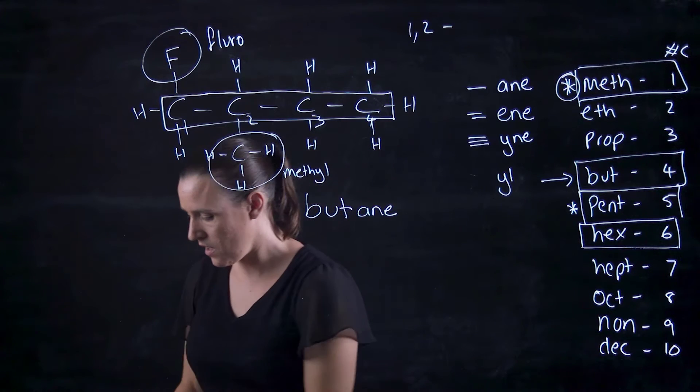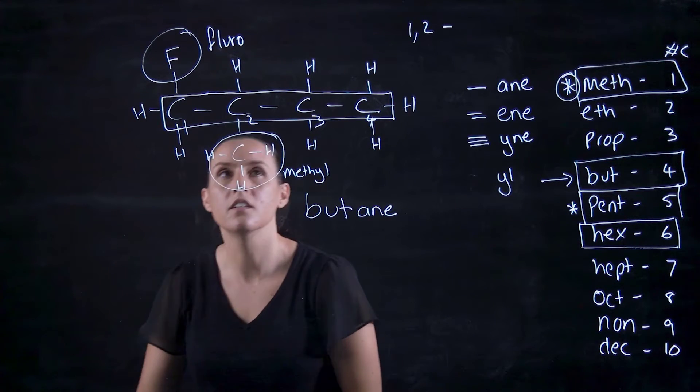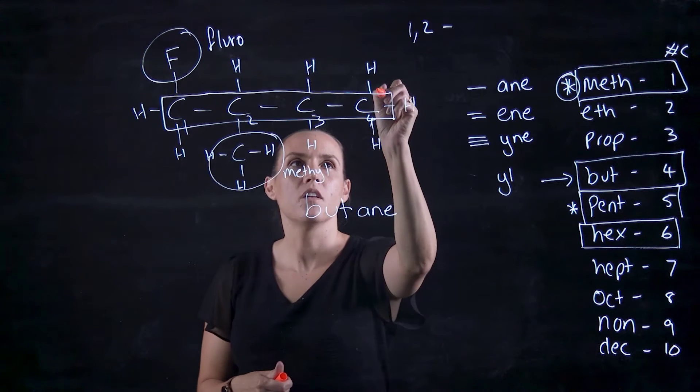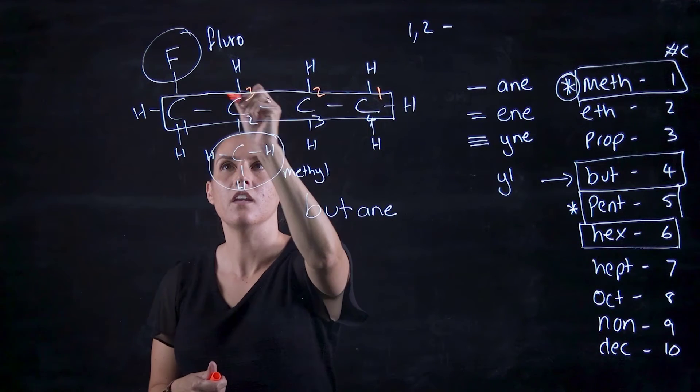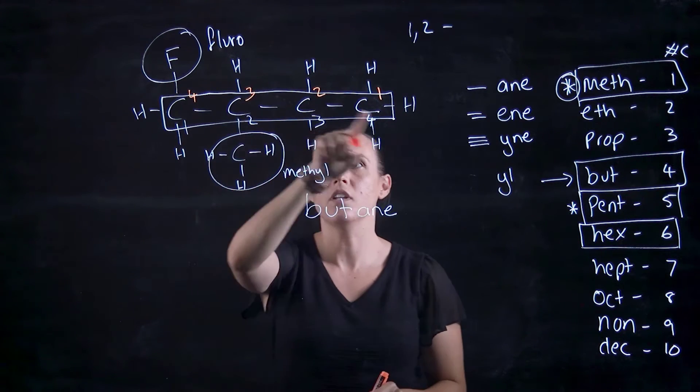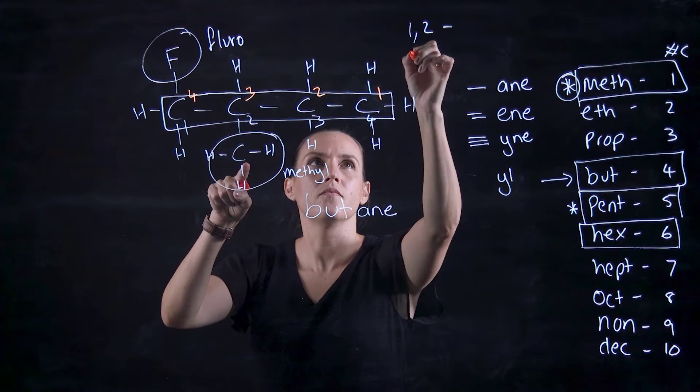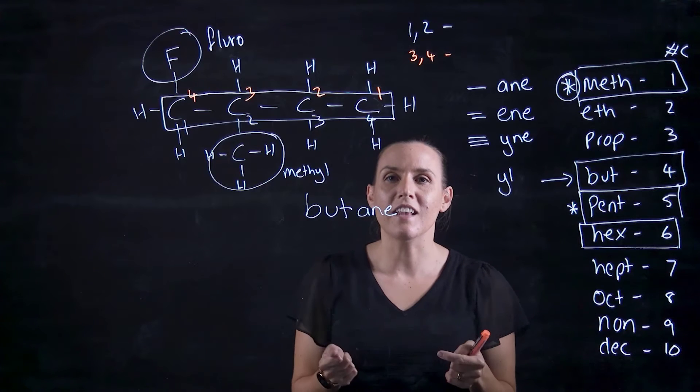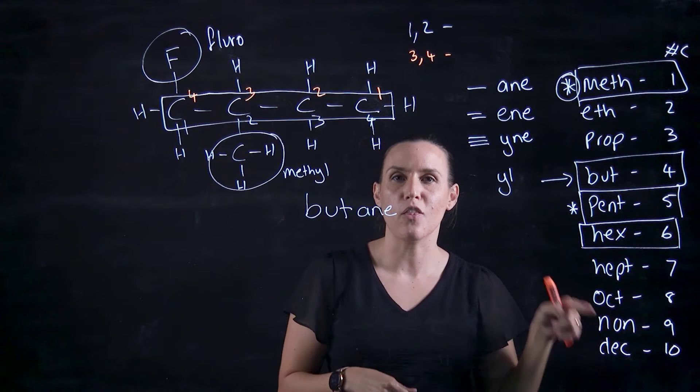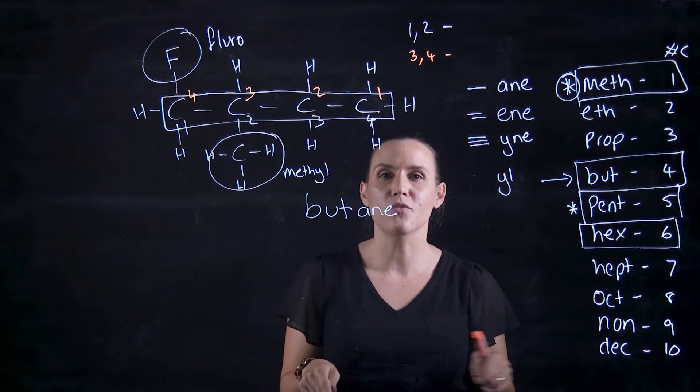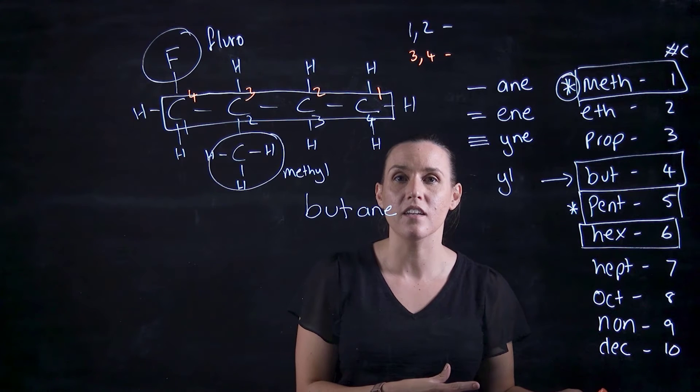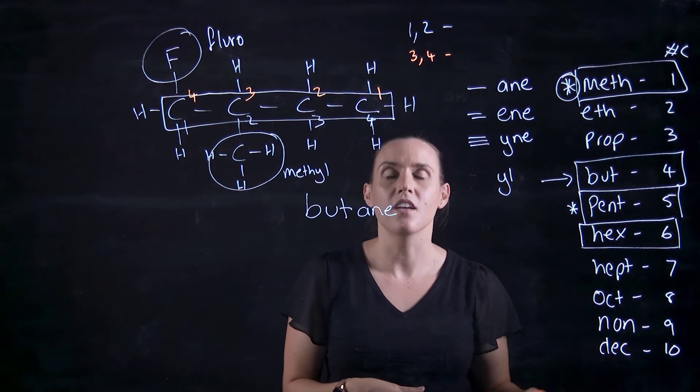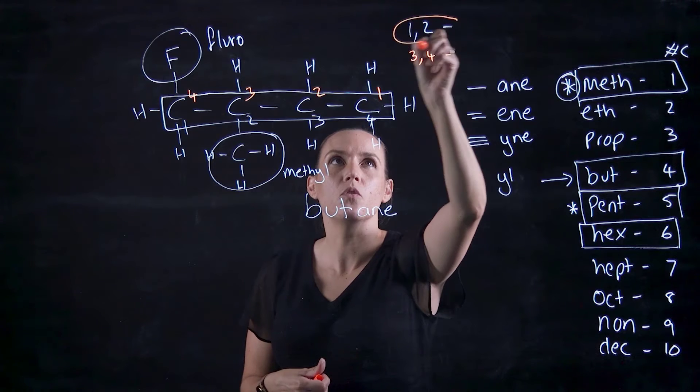Now if I count differently from the other side, 1, 2, 3, 4, I would get a 3-methyl and a 4-fluoro. So if I literally get my calculator and I add 1 plus 2, I get 3. If I add 3 plus 4, I get a larger number than 3. I get 7. So I want to go with the smallest possible.